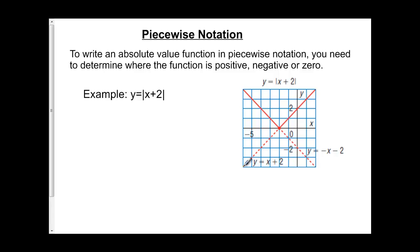So if we look at the original function on this graph, it's this yellow line right here. This line represents the normal function of y equals x plus 2. So for piecewise function, we're going to have y equals, and we're going to split it into two parts.